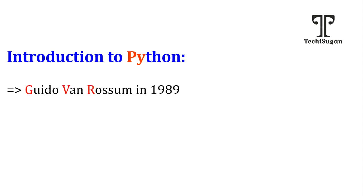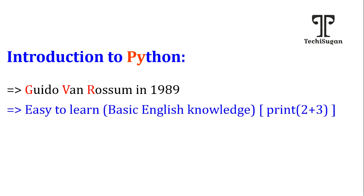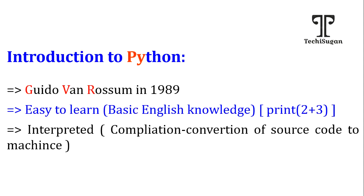Guido van Rossum is the person who introduced Python in the year 1989. This Python is very simple and easy to learn. Only basic English knowledge is required to use Python — no programming knowledge is required. For example, if you want to add two numbers, you can just print 2 plus 3, and the addition of those two numbers is going to be printed. Only basic English knowledge is required to understand this code.